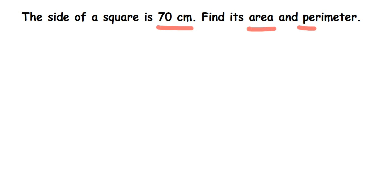Let's start with what is given. They have given side which is equal to 70 centimeters. Now first we want to find out the area. What is area of square? Area of square is side squared, or side into side.